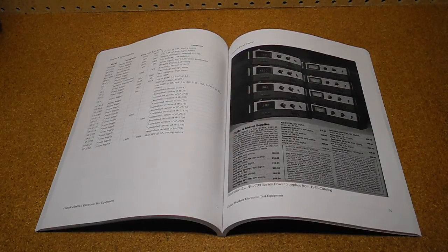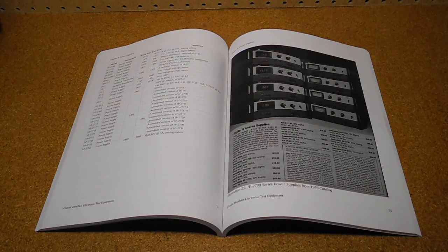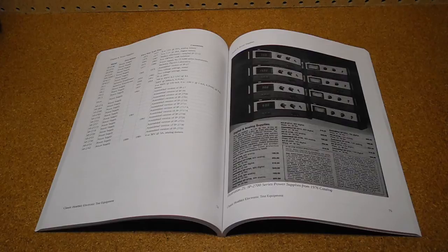Each chapter includes one or more in-depth sections that look at a representative model from my Heathkit collection covering its features, operation, and notable quirks or trivia.